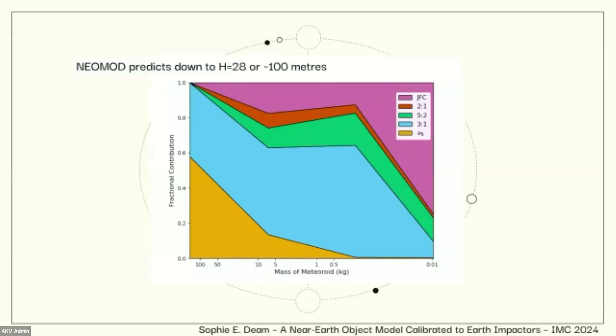And just to note that NEOMOD, which is the current near-Earth object model, that predicts down to H equals 28 or 100 meters, which is way off to the left side of that plot. So we're working in a slightly different size space to other near-Earth object models at the moment.